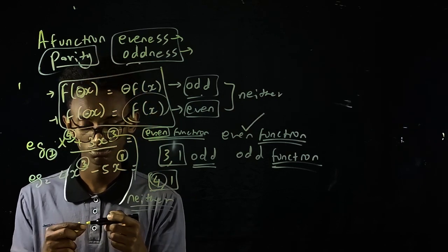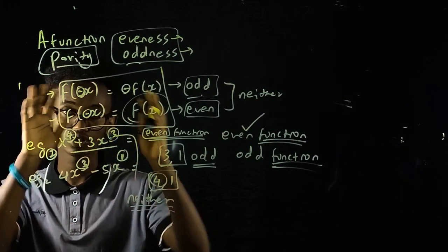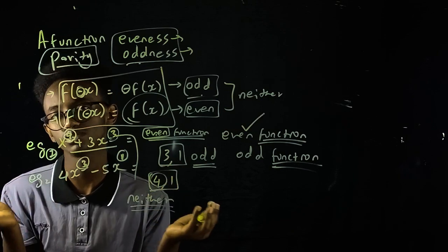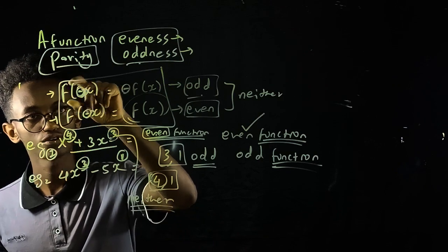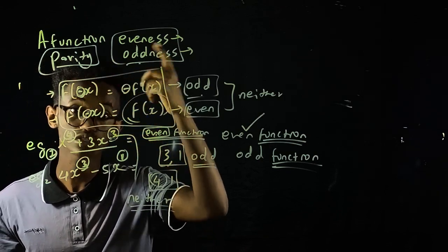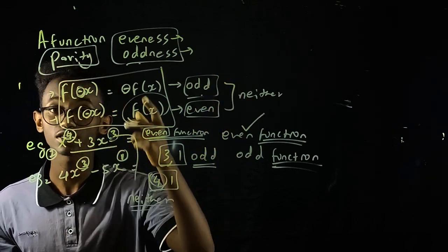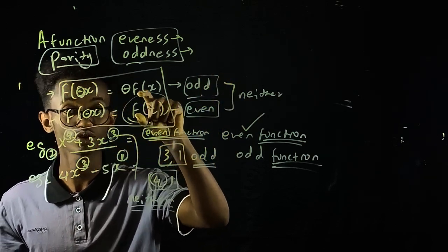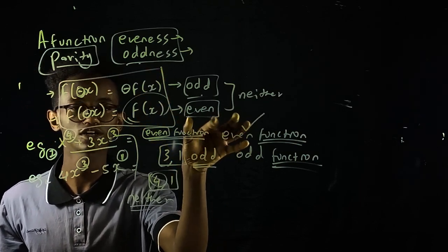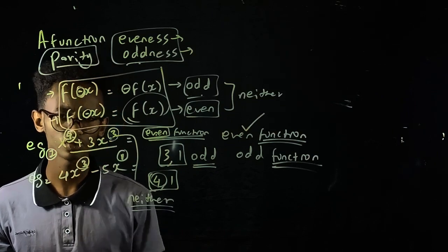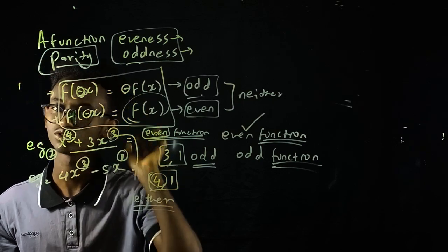Generally, for parity definition: if f(-x) equals f(x), the function is even. If f(-x) equals negative f(x), the function is odd. Choose your best approach based on these definitions.